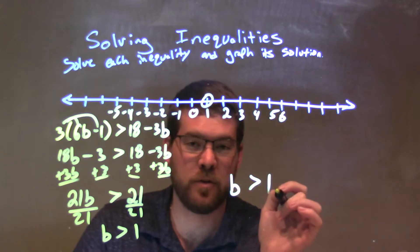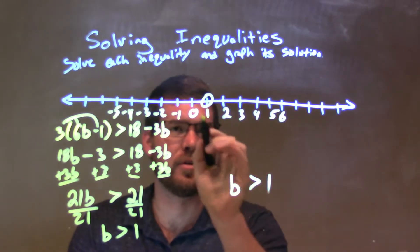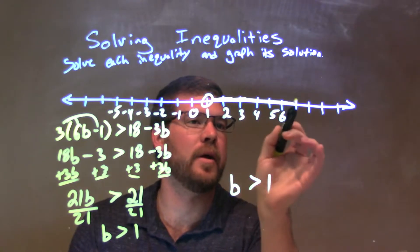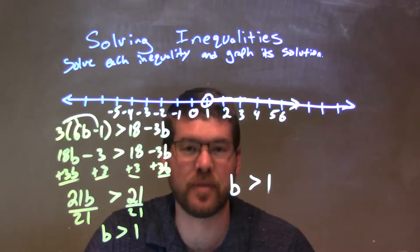So b is greater than 1. All right, we have put an open circle, not equal to at 1, and then we shade to the right, showing that it's greater than 1. And there we have our final answer.